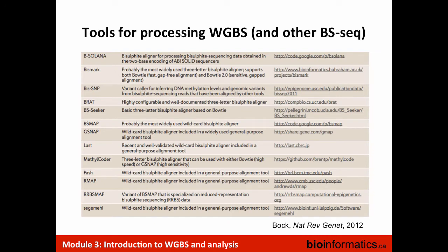In terms of tools for bisulfite sequencing analysis — whether RRBS, MC-seq, or whole genome bisulfite sequencing — when you're getting bisulfite-converted reads, how do you actually do the analysis? Tools we're going to use and describe in more detail include Bismark and BSNP, but there are many others: LAST, PASH, and others. These are tools to take bisulfite-converted reads, map them on the genome, and assess the methylation status.